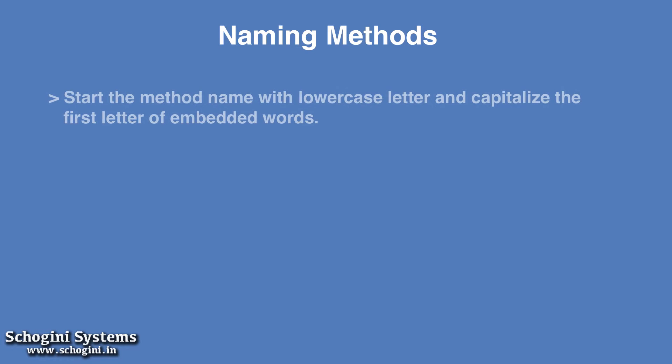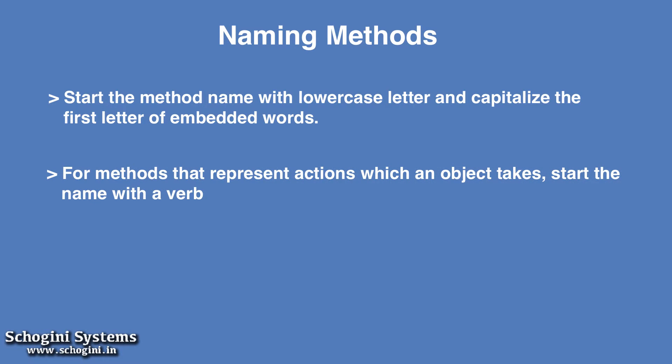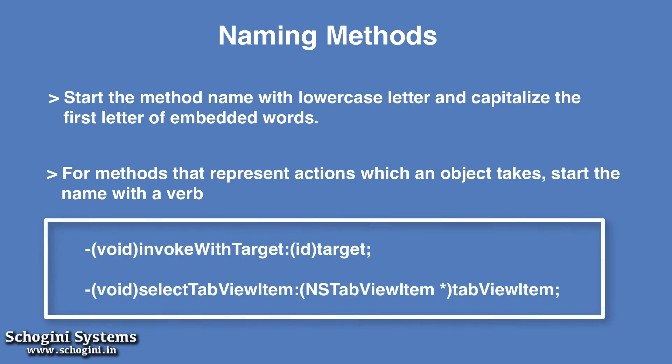A method name in Objective-C normally starts with a lowercase letter and capitalizes the first letter of embedded words. For methods that represent actions which an object takes, we can start its name with a verb. See the examples shown, which implement these properties.